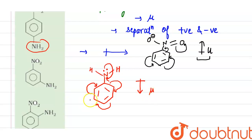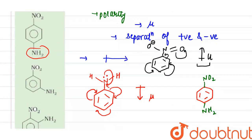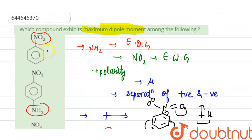Now in para-nitroaniline, where both NH2 and NO2 groups are present, the net resultant dipole moment will be upward because the individual moments mu and mu-dash both act in the same direction. The net resultant mu-net is in the upward direction, so this compound will have the highest dipole moment among all these benzene derivatives.